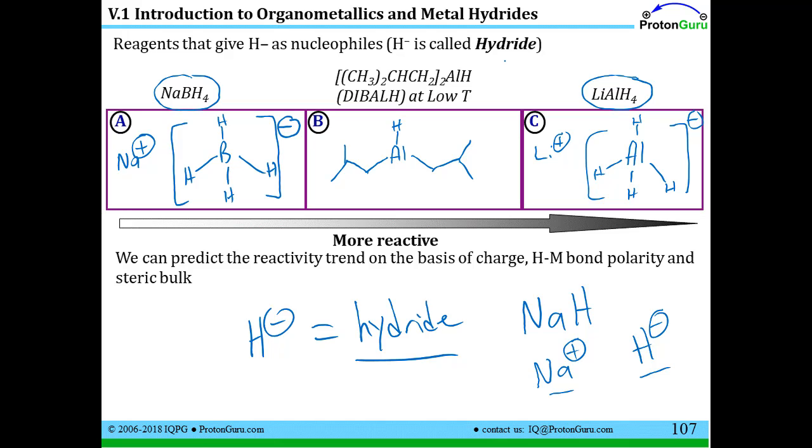Let's think about these and evaluate their reactivity. I've indicated that lithium aluminum hydride is the most reactive. If you think about the polarity of these bonds, the aluminum-hydrogen bond is much more polar than a boron-hydrogen bond. Now, this structure has a negative charge on it, which makes it a little more reactive than if we had a neutral boron species, certainly.